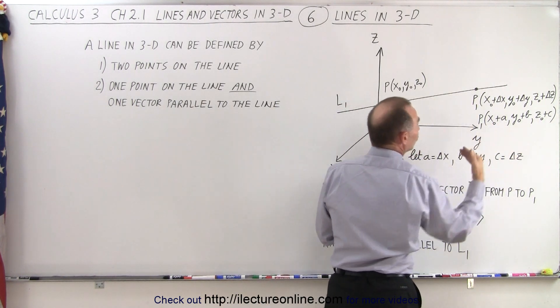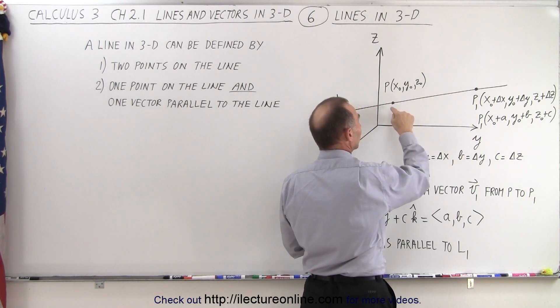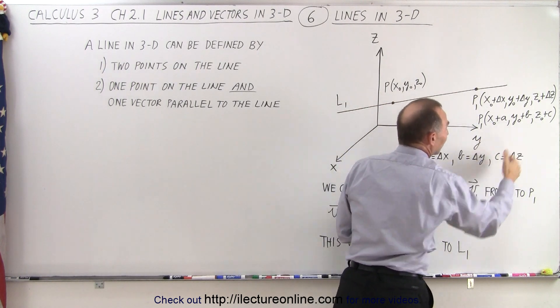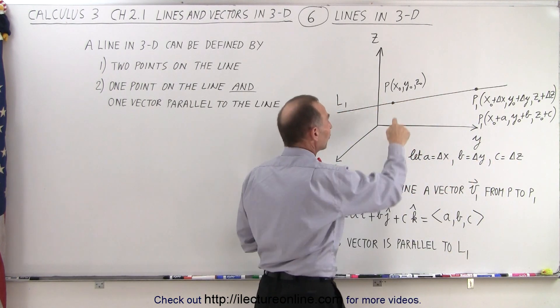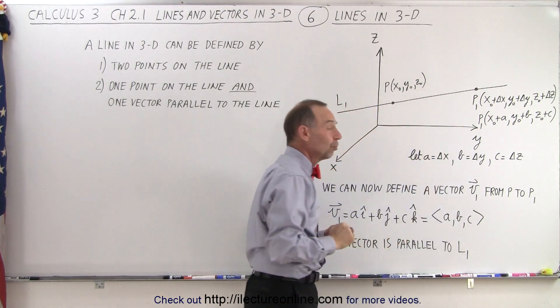Which means that a is the change in distance in the x direction from this point to this point, b is the change in the distance in the y direction from this point to this point, and c is the distance change in the z direction from this point to this point.